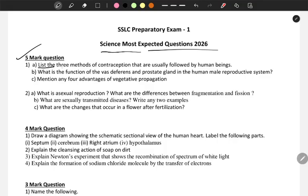First question is list the three methods of contraception that are usually followed by human beings. Next, what is the function of the vas deferens and prostate gland in the human male reproductive system? Then mention any four advantages of vegetative propagation.